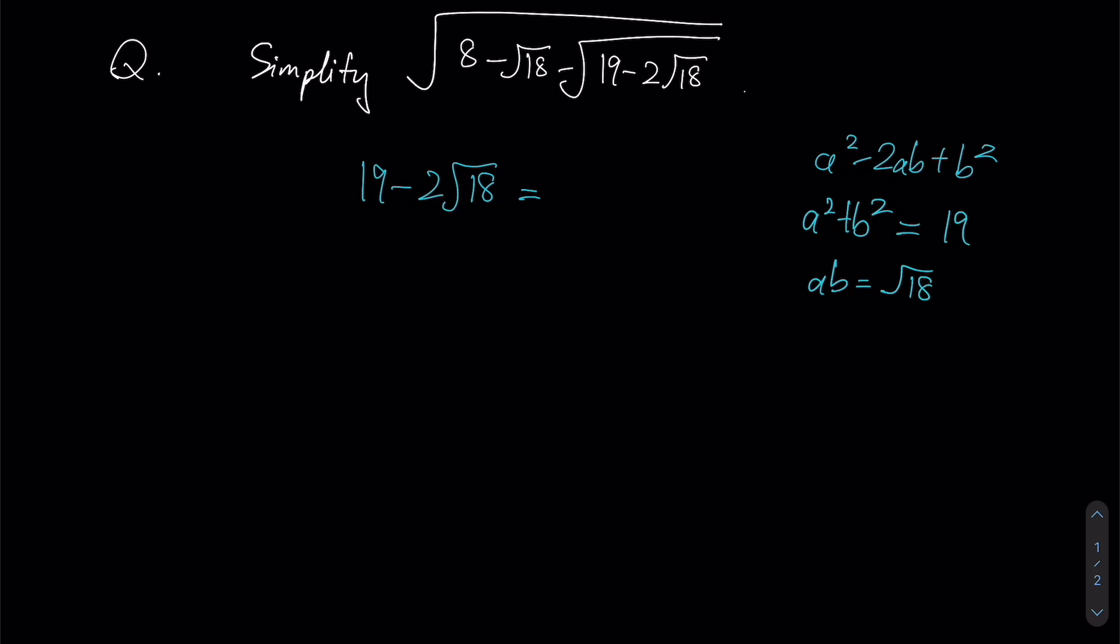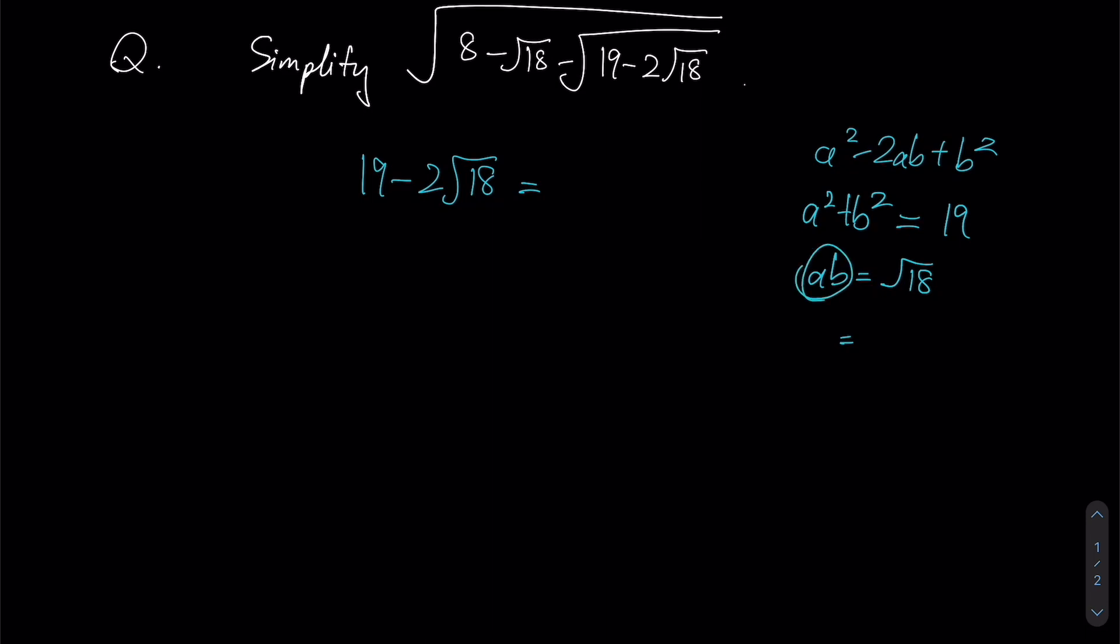A simple way to start considering your individual values for a and b would be to see that root 18, since it is written as a product of a and b, could be root 1 times root 18, it could be root 2 times root 9, or even root 3 times root 6. All three values are technically valid, but when we start to consider the above equation, the sum of your squares must be equal to 19, and therefore it should be obvious that this is the only possible case where your sum is going to be 19.